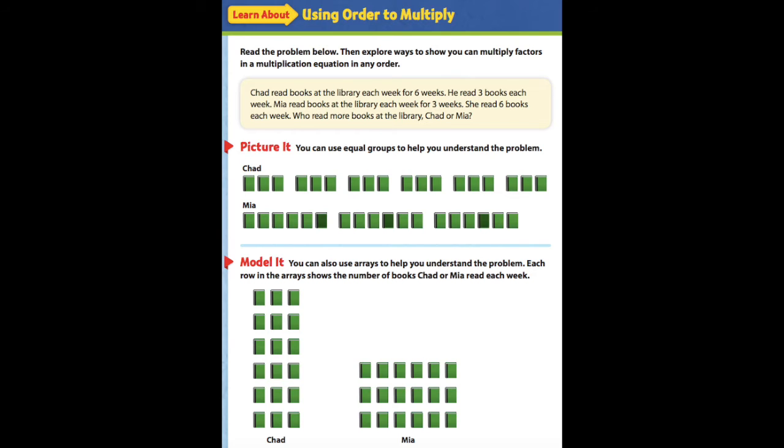Chad's array looks like this one, where it has the 6 rows, and then in each row there are 6 books. And then for Mia, her array has 3 rows, but in each of her rows she has her 6 books.